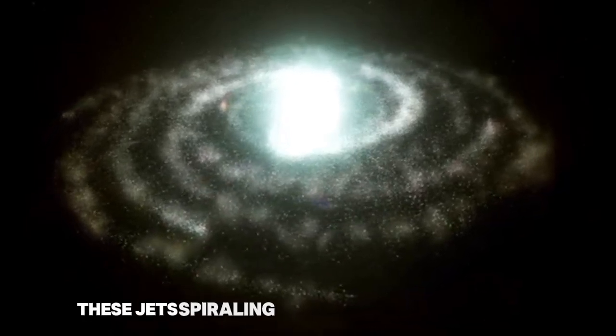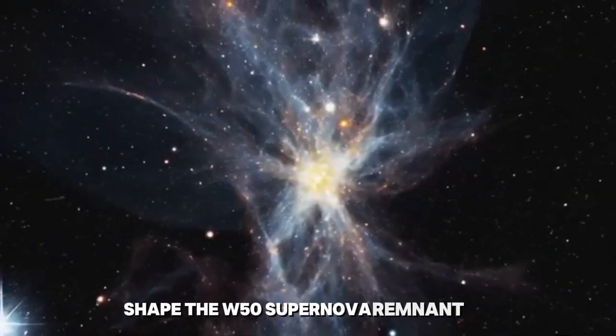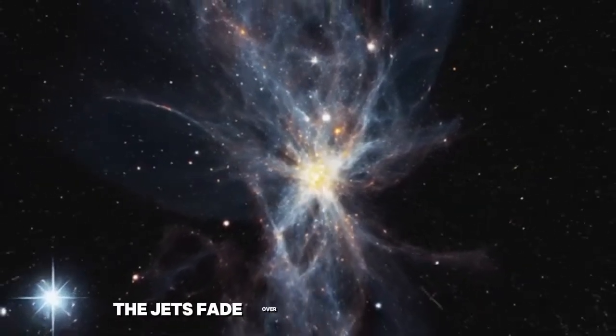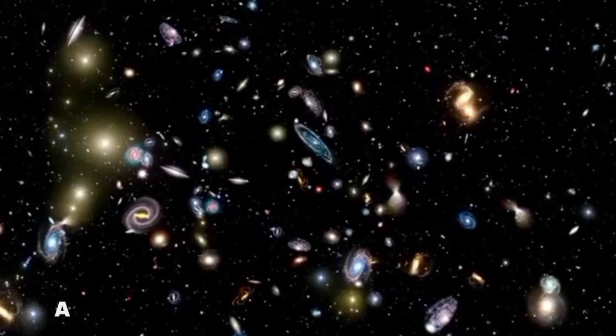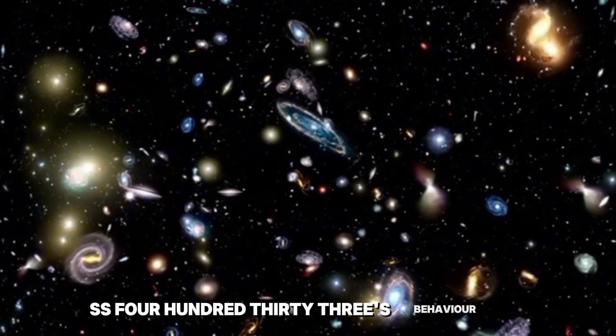These jets, spiraling in a corkscrew pattern, shape the W-50 supernova remnant, giving it the appearance of a vast manatee. The jets fade over time but reappear, a phenomenon driven by the repetitive nature of SS433's behavior.